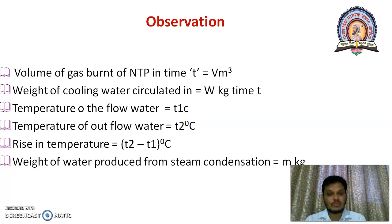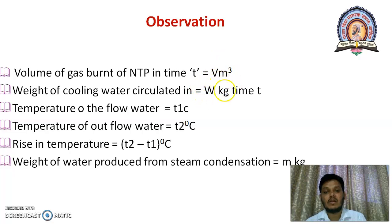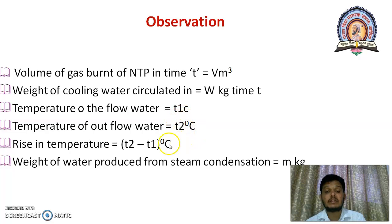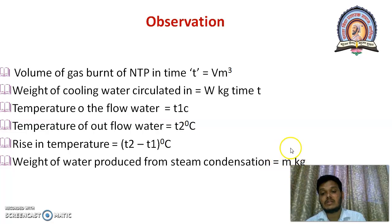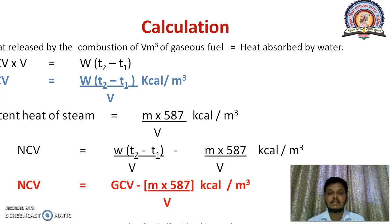There are four to five observations we are going to record. First is volume of gaseous fuel burned — V meter cube. Second is weight of cooling water circulated in calorimeter — capital W kilograms. Third is temperature of inlet water T1 degree Celsius. Temperature of outlet water T2 degree Celsius. Rising temperature is T2 minus T1 degree Celsius. And the weight of steam collected after condensation — small m kilogram. These are the observations we are going to record in Boyce gas calorimeter.